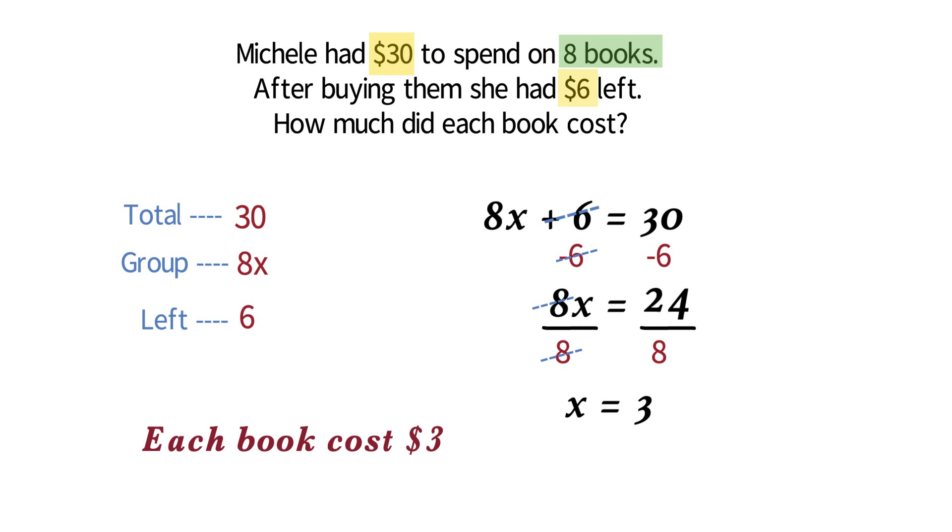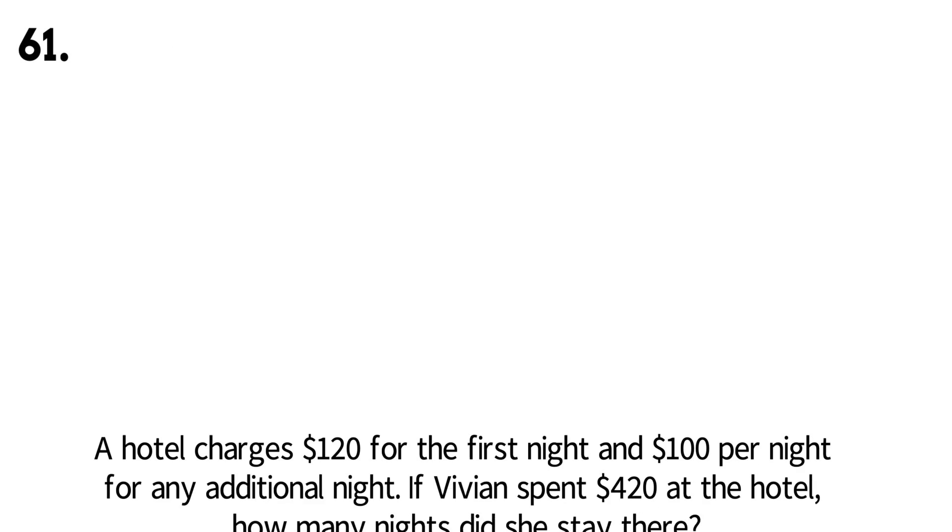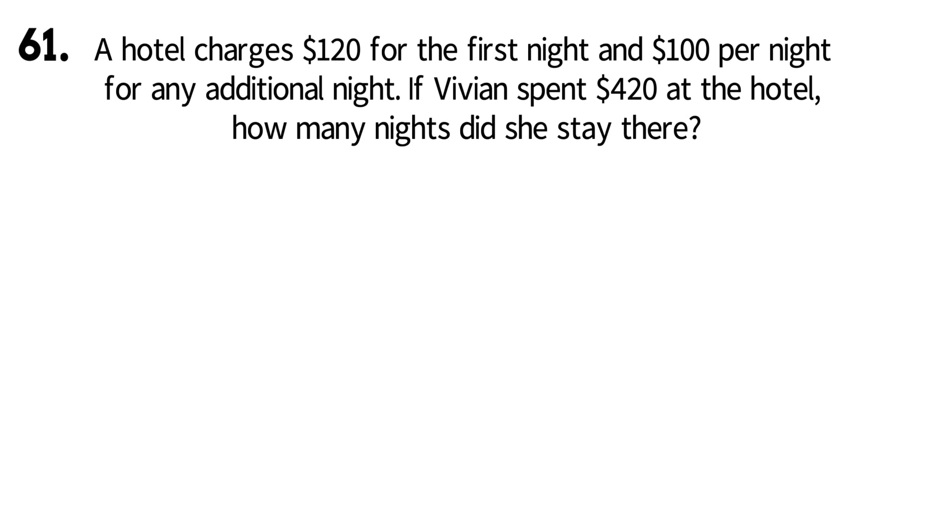Now on to our first question for this video. Question 61. A hotel charges $120 for the first night and $100 per night for any additional night. If Vivian spent $420 at the hotel, how many nights did she stay there? This is also another very common kind of two-step GED word problem. Here, all our three values are in dollars, so you have to find the group in a different way. I call it the revolving.